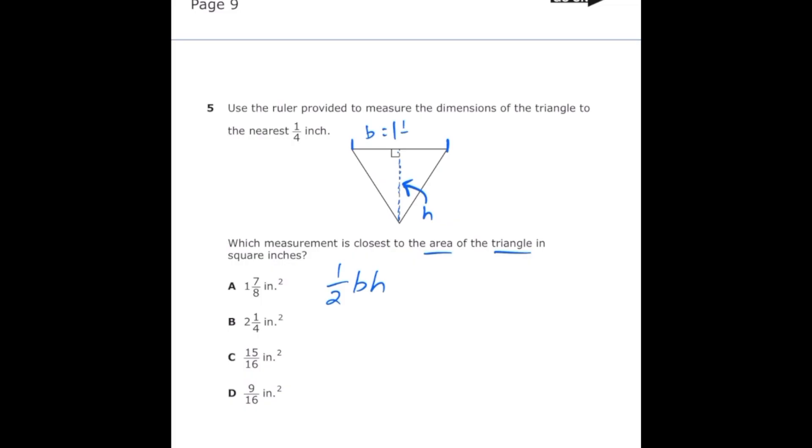Once I use my ruler to measure the sides, I'm going to see that my base is equal to one and one fourth inch, or one and a quarter, and my height is equal to one and a half inches. So once I plug that into my formula, I'm going to have one half times one and one fourth times one and a half. If I change my fractions to improper fractions, it's going to make it a lot easier to multiply. So one and one fourth is going to become five over four, and one and a half is going to become three over two. Now to multiply, I just have to multiply all the numerators and then all the denominators. So that's going to give me one times five is five times three is fifteen, and then two times four is eight times two is sixteen. So my answer is going to be fifteen over sixteen.